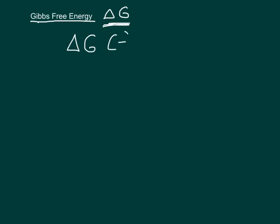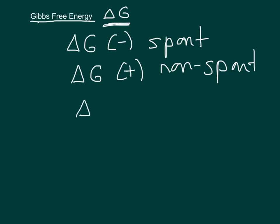If delta G is negative, it is by definition spontaneous. If delta G is positive, it is by definition non-spontaneous. And what about if delta G is zero? What's somewhere between spontaneous and non-spontaneous? It means it's at equilibrium.